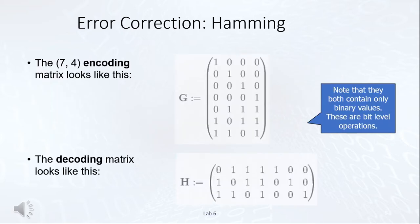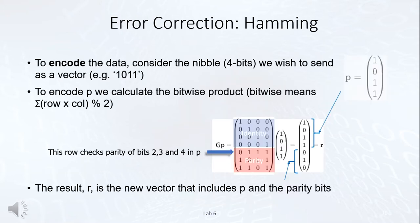Encoding and decoding in 7-4 Hamming codes works by multiplication of the data with Hamming matrices. There is an encoding matrix denoted G and a decoding matrix denoted H. Both contain only binary 1 or 0 values because these are bit-level operations. To encode data — for example the bits 1, 0, 1, 1 — we multiply G (the Hamming encoding matrix) by P (the column vector of those bits), using row-by-column multiplication in a bitwise operation.